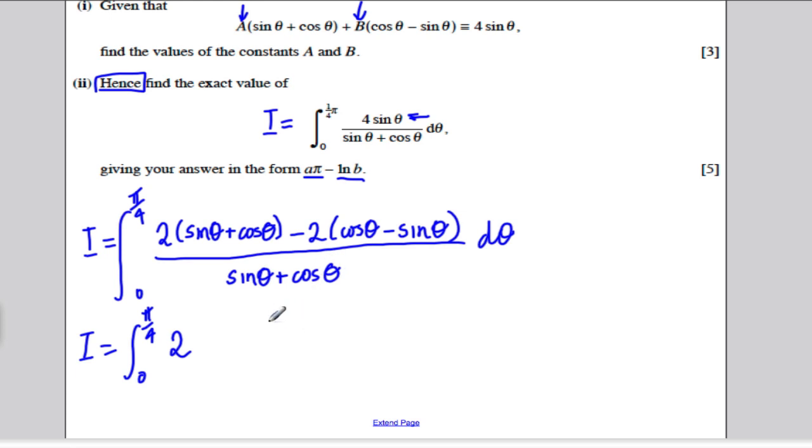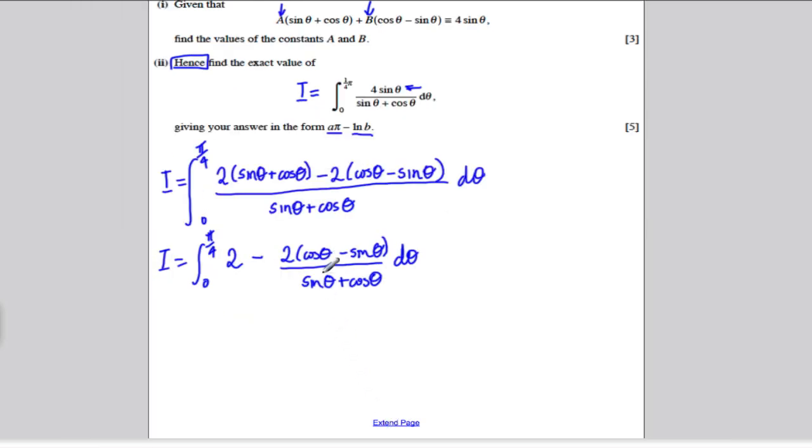And then the other side, we would simply still have minus 2 cos theta minus sine theta over sine theta plus cos theta. Now, at this point here, things are looking a bit better, because this is integrable. You know the integral of this with respect to theta. And this actually is, if you have a little think.